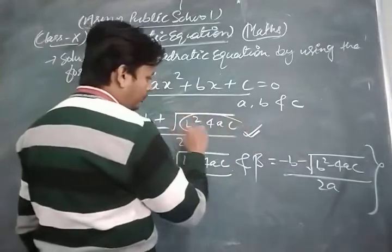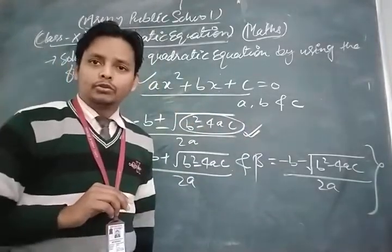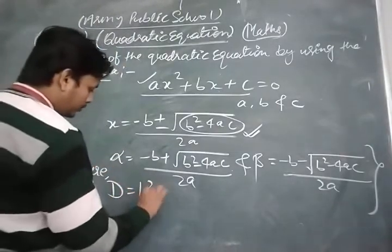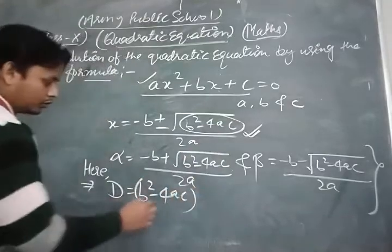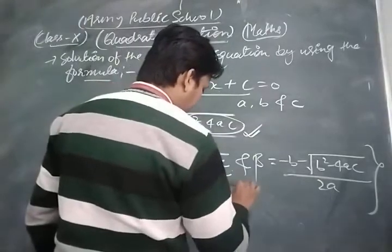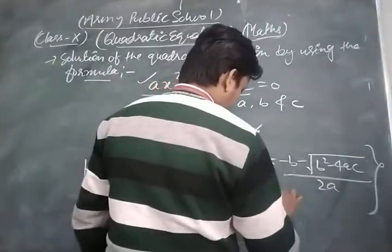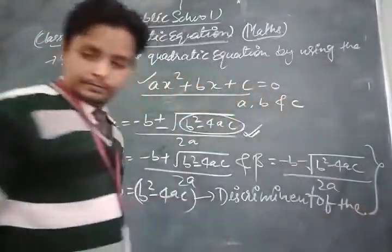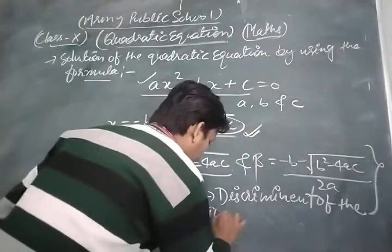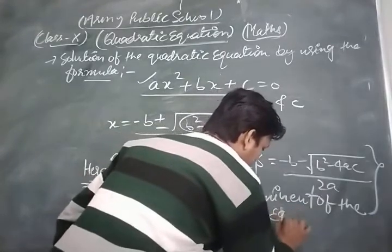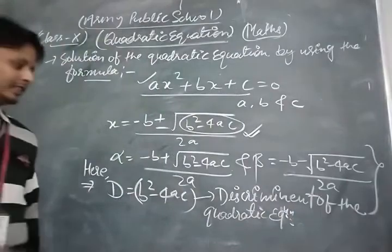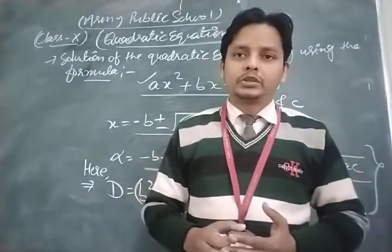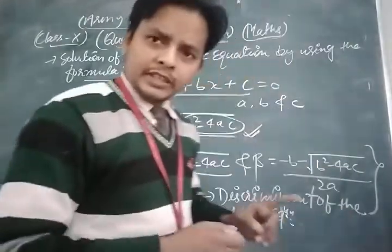The value b² - 4ac is called the discriminant of the quadratic equation. We denote it as D, so D = b² - 4ac. This is called the discriminant of the quadratic equation. One very important thing: the nature of the roots of any quadratic equation depends on its discriminant.